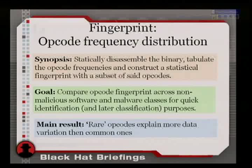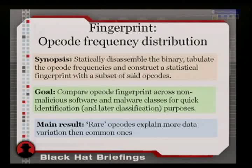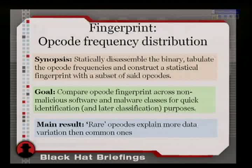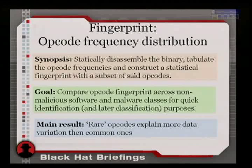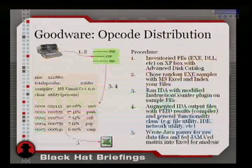As a very simple example: the average of 1, 2, and 5 is the same as the average of 2, 1, and 5, even though the order is permuted. The main result I got here is that rare opcodes explain much more variation than the common ones — I'll show you this in a second.